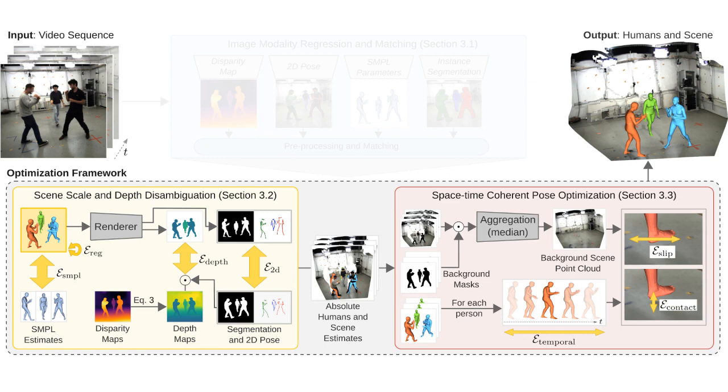Once a global scale of the scene is obtained, we further compute a scene point cloud for the background, which is useful for penalizing the contact between the feet and the ground, as well as for penalizing foot-slip artifacts. We also implement a temporal smoothness term, which significantly reduces jitter artifacts in our final predictions.